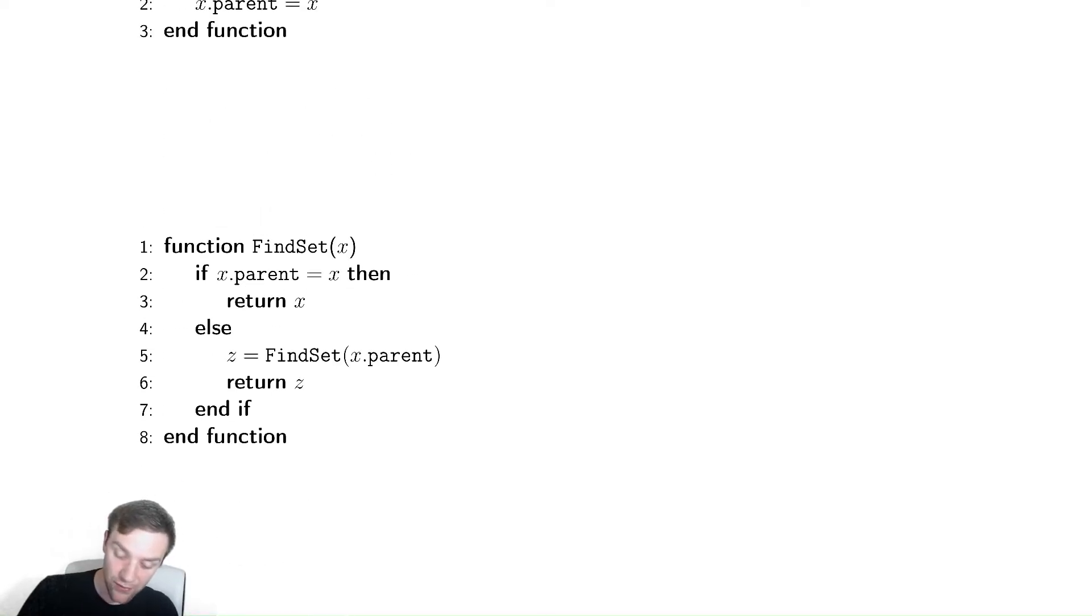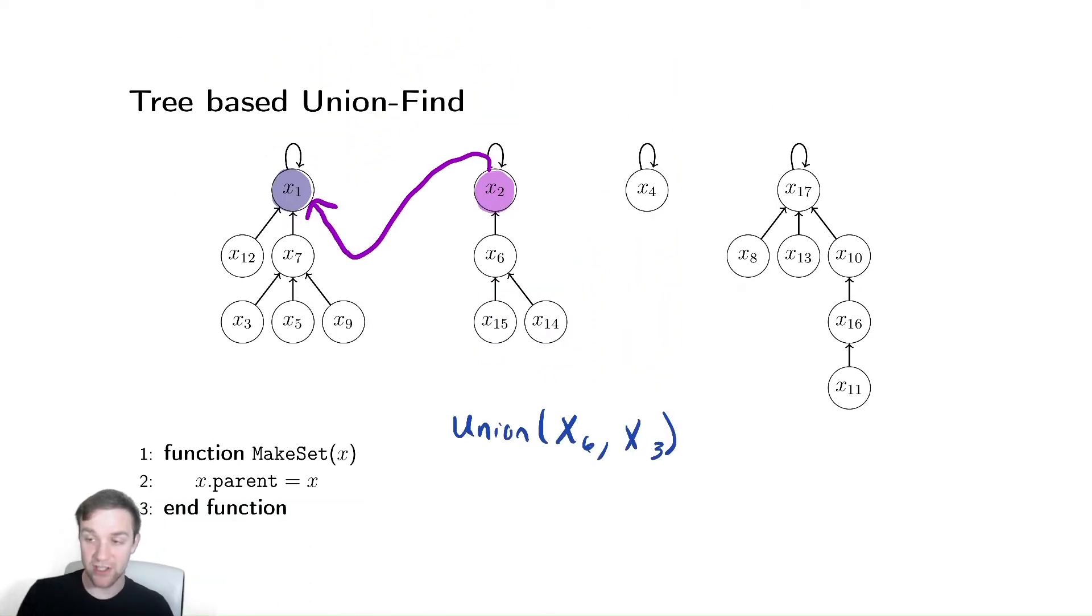So instead of trying to combine them based on the length, because we don't have a length here, there are two ways I think are very natural. We could talk about the number of elements. So, for example, this has six elements, and this has four elements, and then combine them so that we always take the thing with the fewer number of elements and make it point at the thing with more elements.